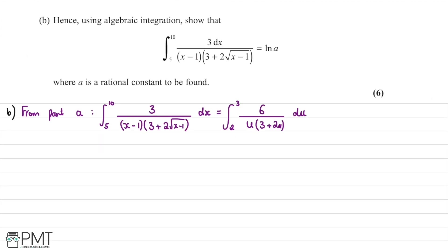In the next part, we're asked to use algebraic integration to show that the integral from 5 to 10 of 3 divided by x minus 1, times 3 plus 2 root x minus 1, with respect to x, equals ln of a, where a is a rational constant to be found. From part a, we know this integral equals the integral of 6 over u times 3 plus 2u, from 2 to 3, with respect to u.